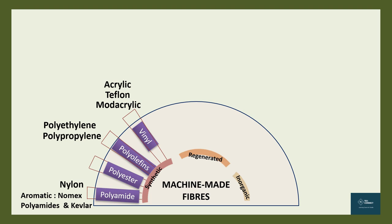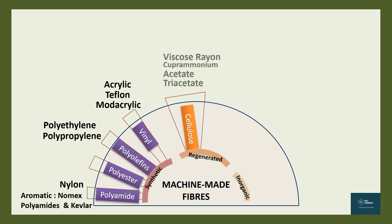Moving on to regenerated fibers — when natural sources are treated and reproduced into fibers, they are known as regenerated fibers. The cellulose and protein are dissolved in chemicals and then fibers are extracted. Rayon is a basic term used for all machine-made fibers that have a cellulose base; we have viscose rayon, cuprammonium rayon, acetate, and triacetate.